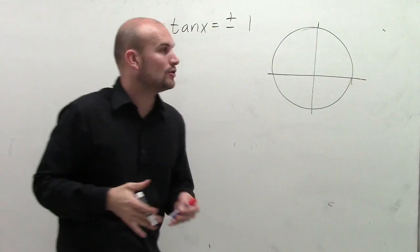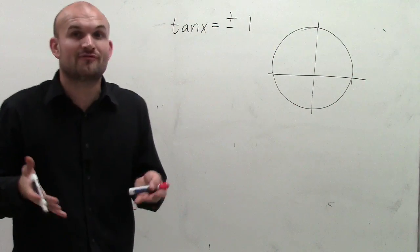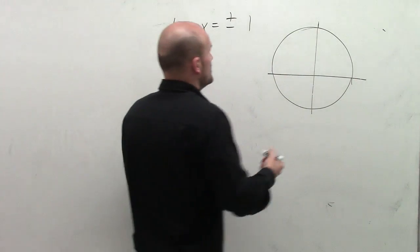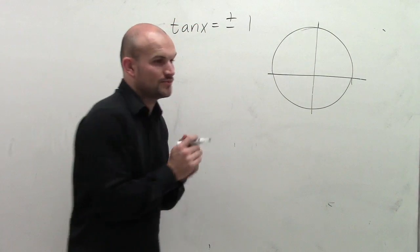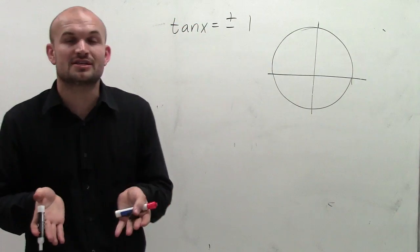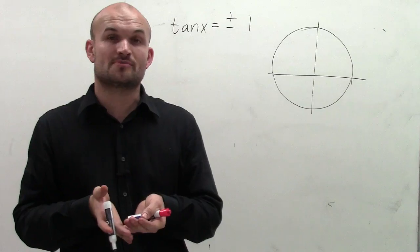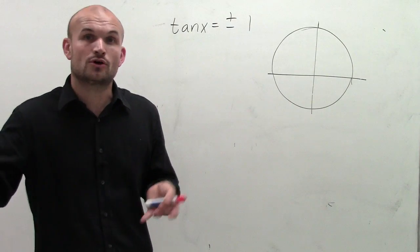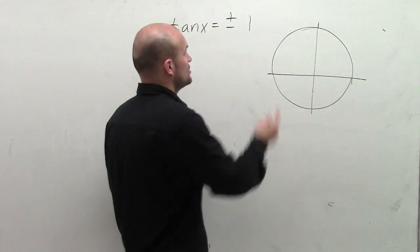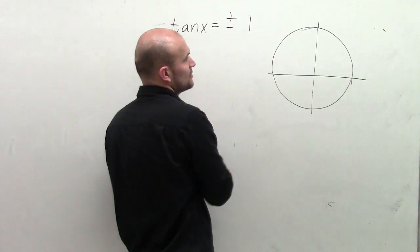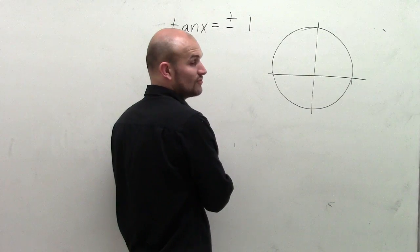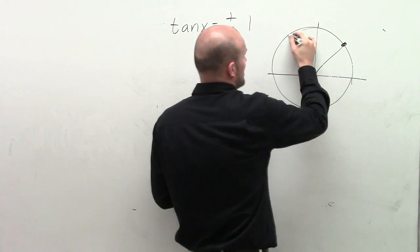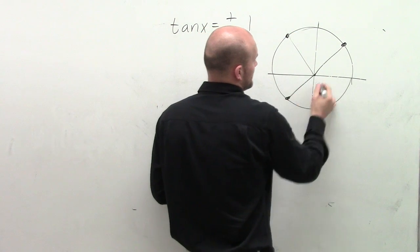So we can figure out what all the solutions are going to be on the graph. When tangent equals plus or minus 1, remember tangent is on the unit circle — we take our y coordinate over our x coordinate. So there are four angles, or four solutions, that we're going to have for this problem on the interval of 0 and 2 pi.